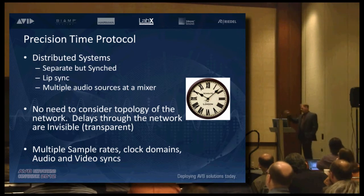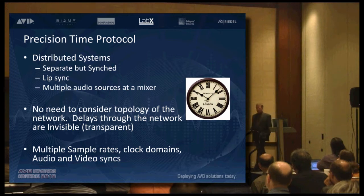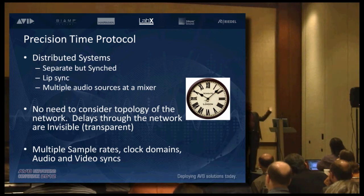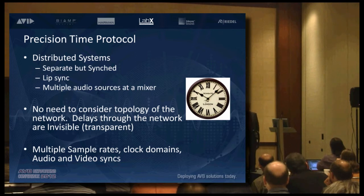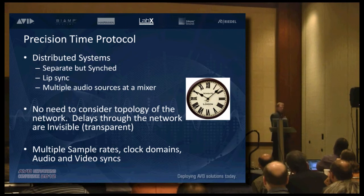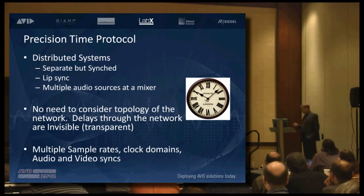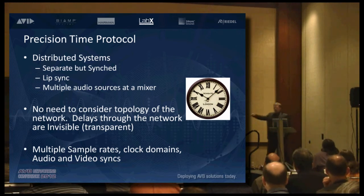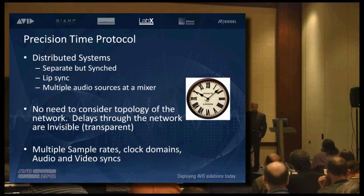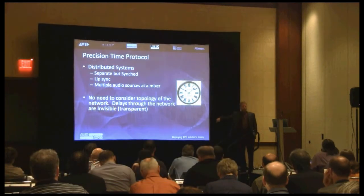Separate audio and video streams that are precisely synced over the network. Sending channels from all types of different sources through all types of different number of hops — you don't need to know what the network looks like, and it'll hit your mixer and it's all synchronized. There's no need to consider the topology of the network; the network deals with that. The underlying thing with AVB is there's a lot of smarts going on. They put it in the box.